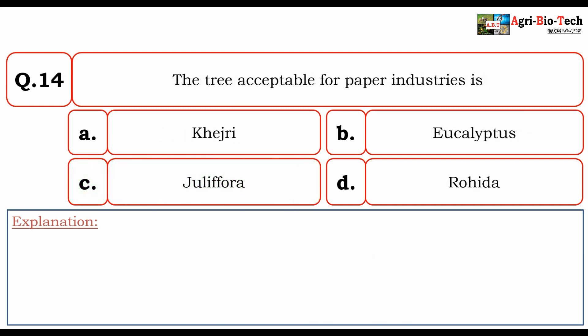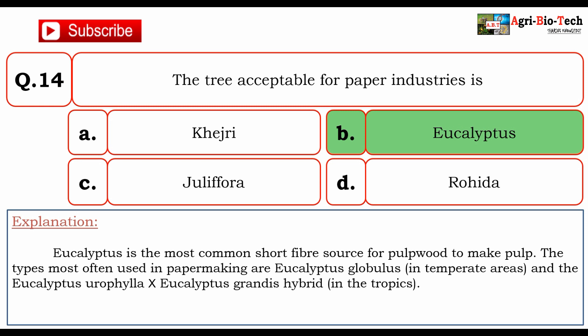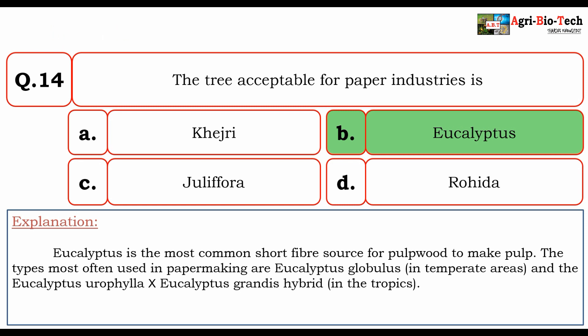Next question: The tree acceptable for paper industries is? Options include Khejiri and Eucalyptus. Eucalyptus is the most common short fiber source for pulpwood to make pulp. The types most often used in paper making are Eucalyptus globulus in temperate areas and Eucalyptus grandis hybrid in tropics. So the correct answer is B. Eucalyptus.